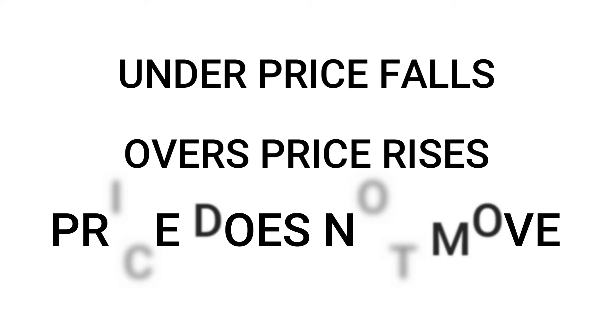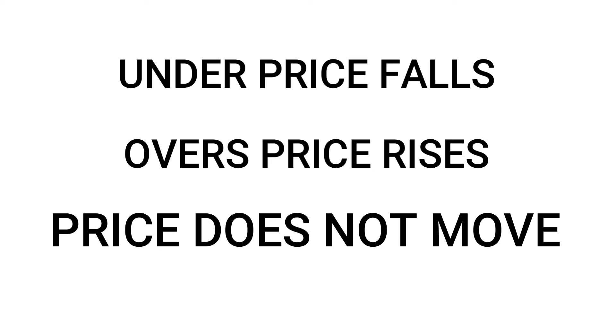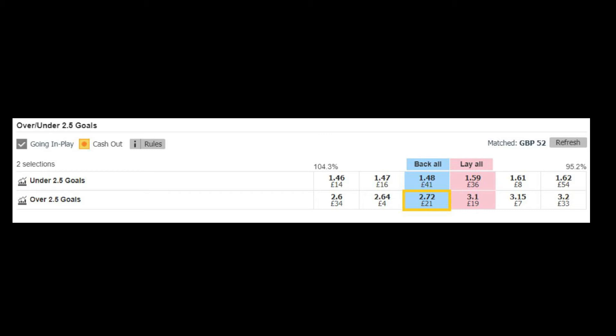Another thing to look for: as we know, the unders price falls and the overs price rises. A sign the markets have got it wrong is when the price doesn't really rise or fall and just sits there for maybe 5 or 10 minutes — this is a good sign that the markets are unsure about the way the match is going. To summarise, look for matches where the odds are stacked against Over 2.5 Goals and the game has a fast start and looks like there will be goals, then you can buy into the trade. This is great for finding hidden value in the market.